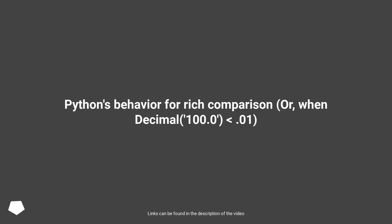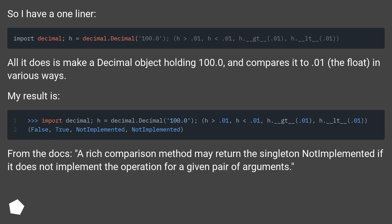Python's behavior for rich comparison when Decimal 100.0 is less than 0.01. So I have a one-liner. All it does is make a Decimal object holding 100.0 and compares it to 0.01, the float, in various ways. My result is...